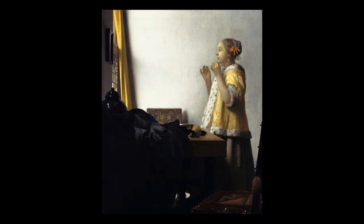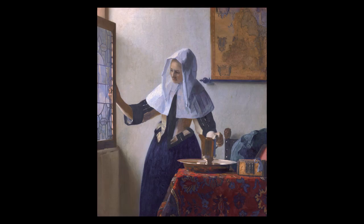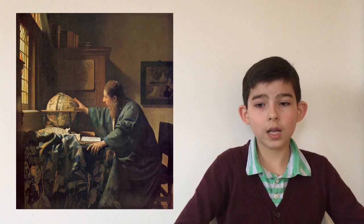The same lighting technique that Vermeer uses in this painting, he also uses in his other paintings such as Woman with a Pearl Necklace, Young Woman with a Water Jug, and The Astronomer.